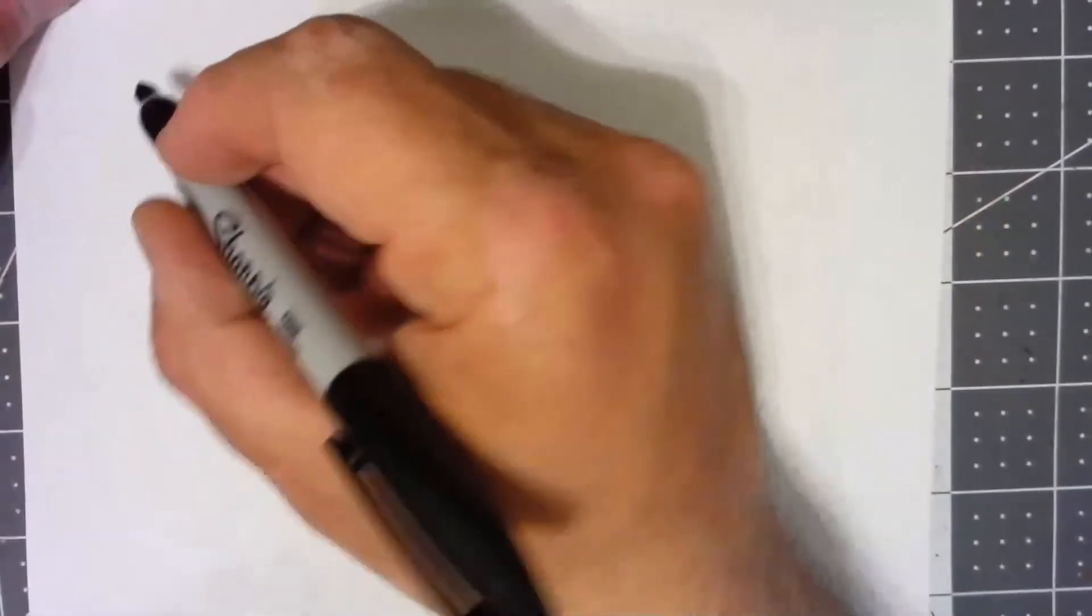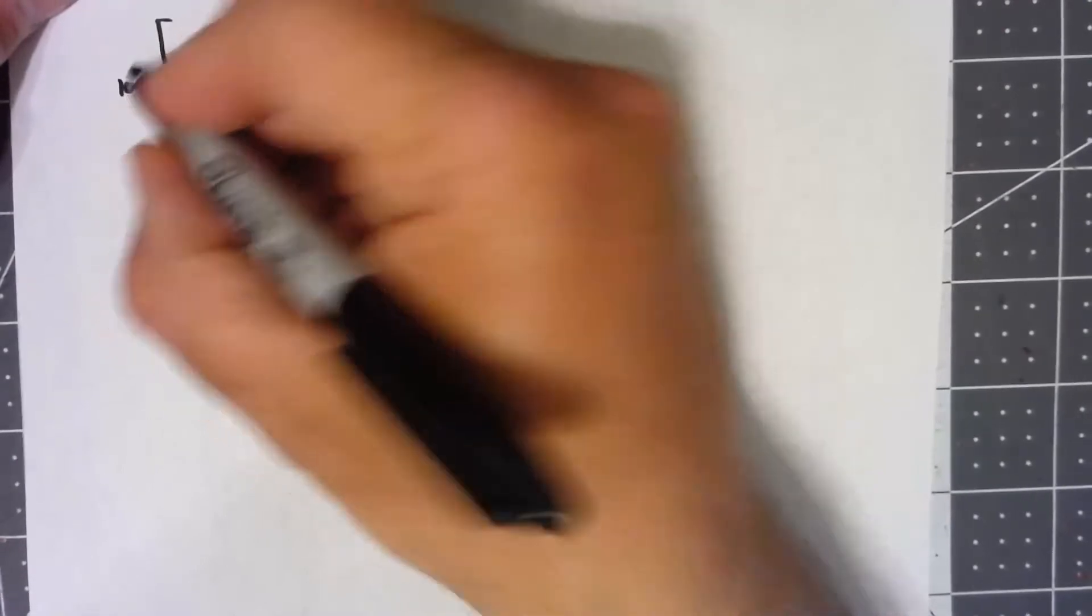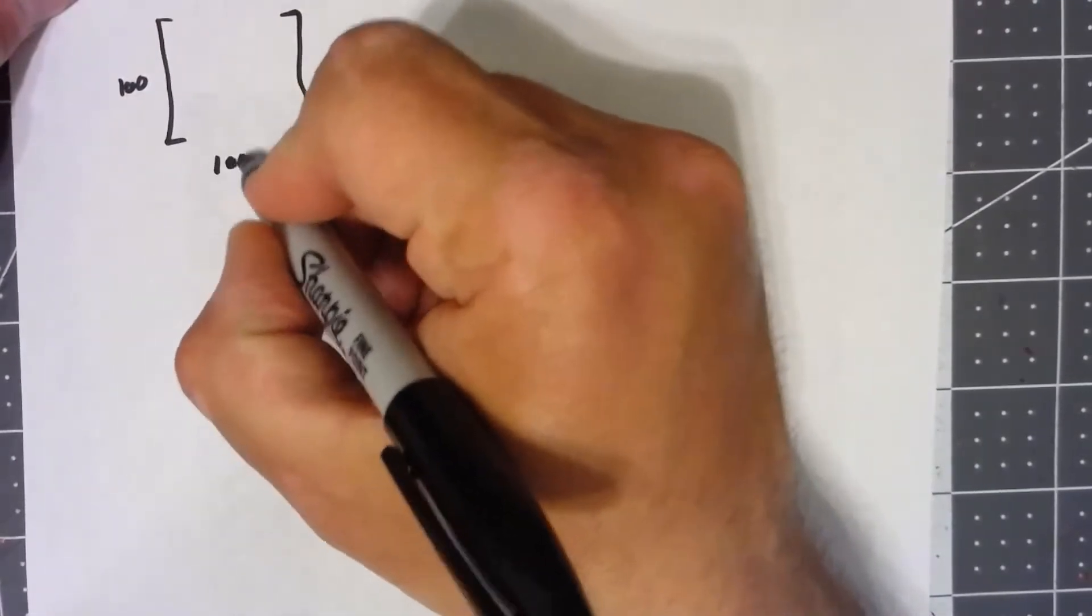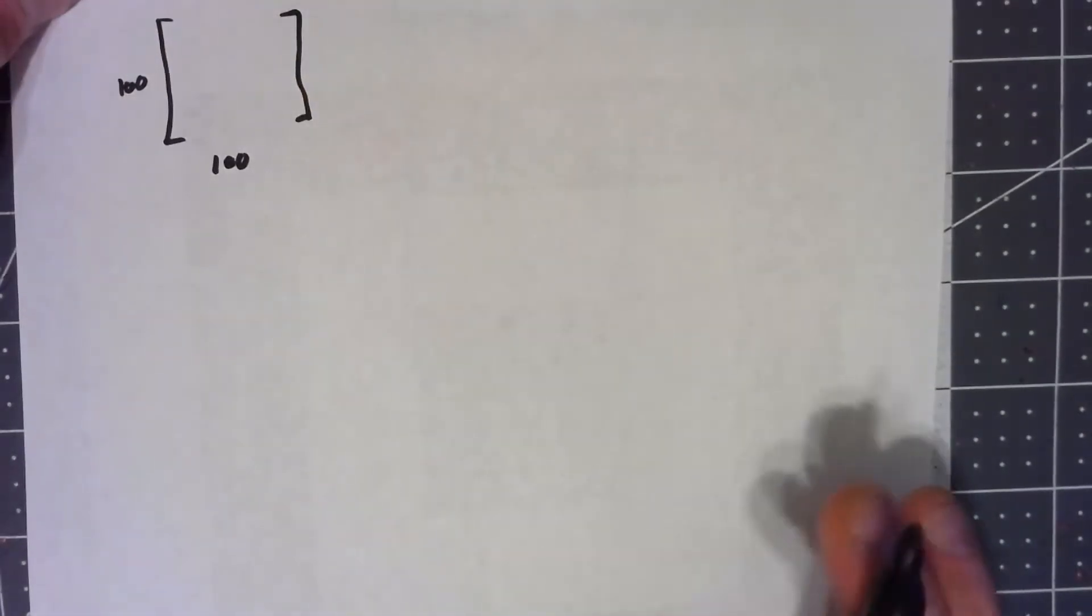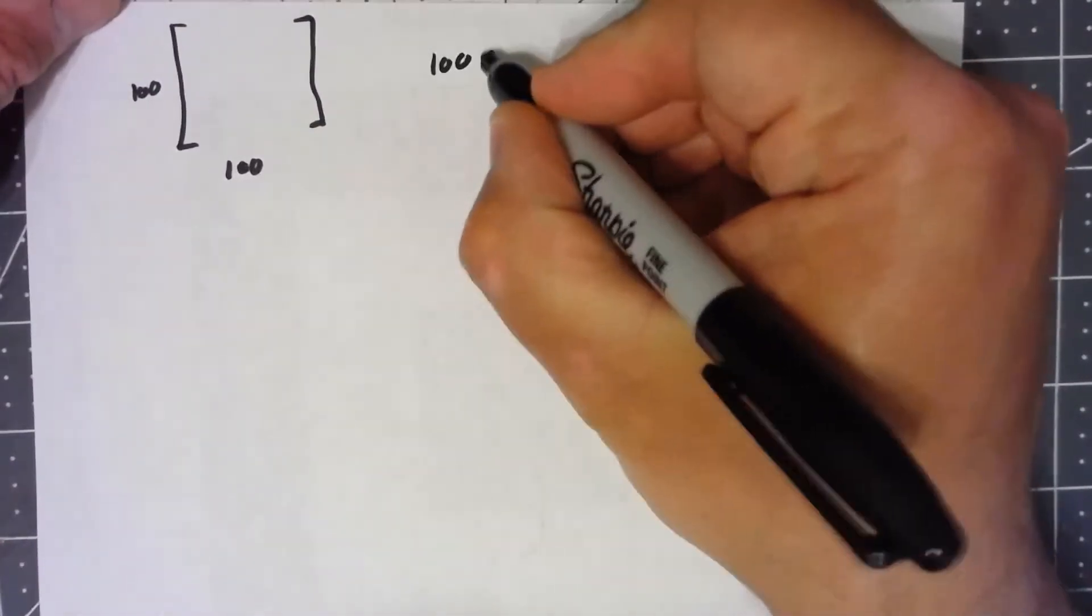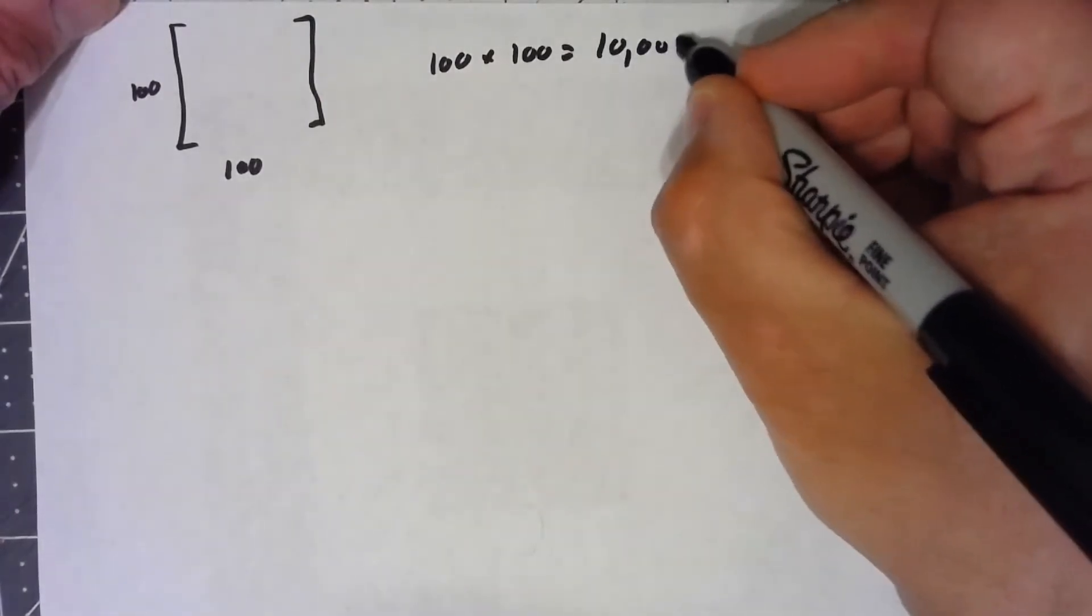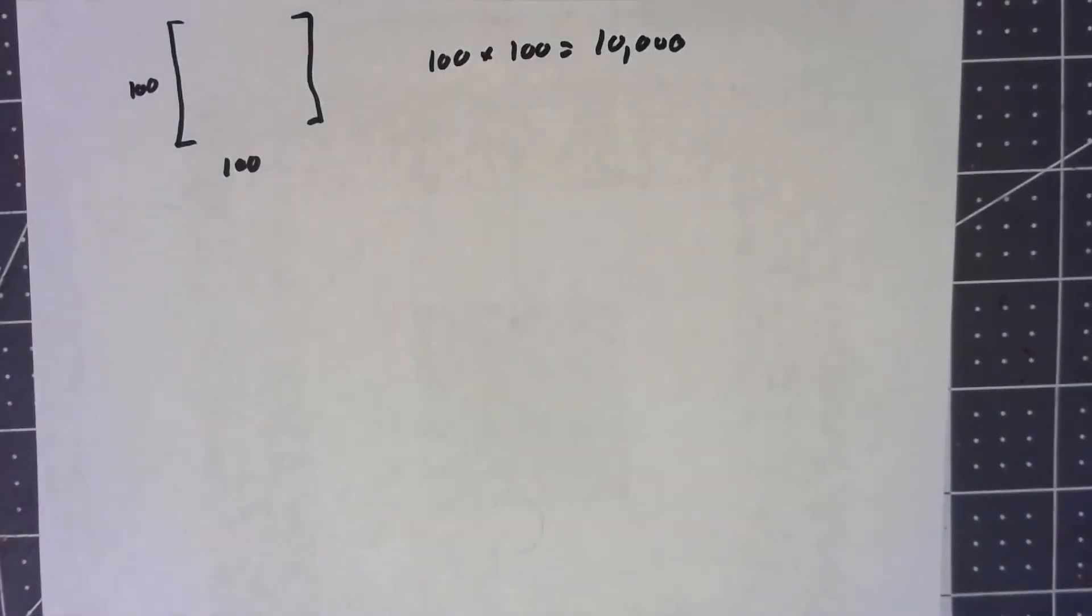Let's suppose we had a huge matrix that was something like 100 by 100. So obviously that would take 100 times 100. We'd have to have 10,000 values stored to store that matrix.